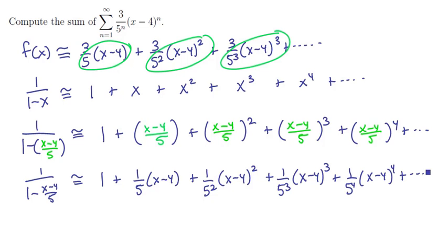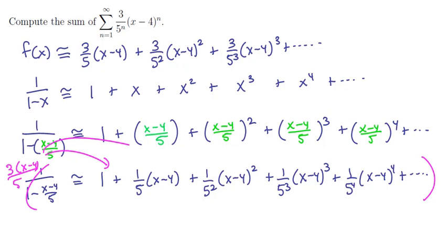Now this is pretty close to the series we had originally, except that the original one had a 3 and an (x minus 4) in the numerator, or in the first term. So let's multiply everything through by 3(x minus 4), and see what we get.